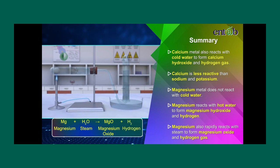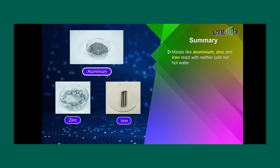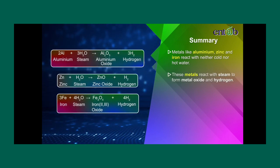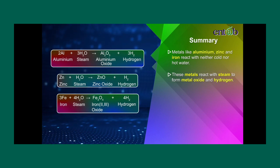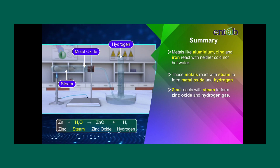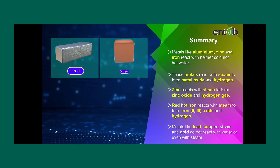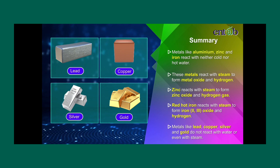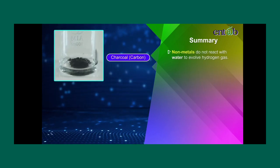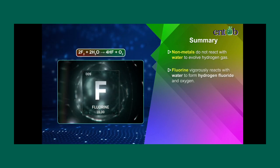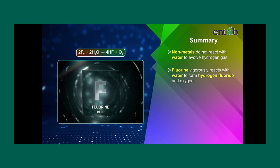Aluminium, zinc, and iron react with neither cold nor hot water; they react with steam to form metal oxide and hydrogen. Zinc reacts with steam to form zinc oxide and hydrogen gas. Red-hot iron reacts with steam to form iron(II,III) oxide and hydrogen. Metals like lead, copper, silver, and gold do not react with water or even with steam. Non-metals do not react with water to evolve hydrogen gas; fluorine is an exception and vigorously reacts with water to form hydrogen fluoride and oxygen.